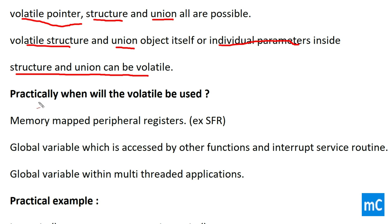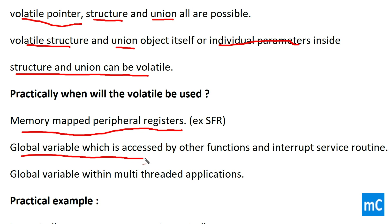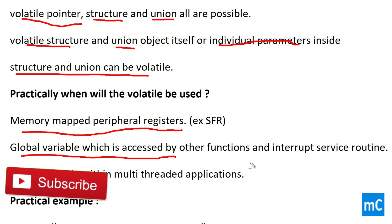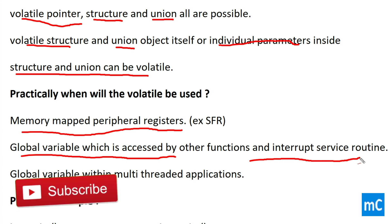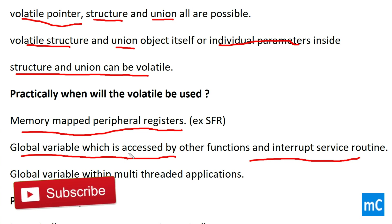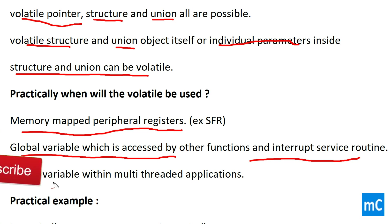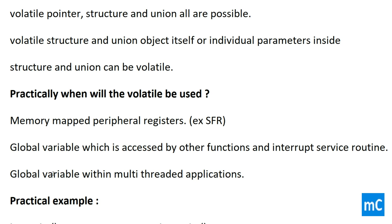Practically, when will volatile be used? First, for memory-mapped peripheral registers. Second, a global variable which is accessed by another function. Third, a global variable within a multi-threaded application. We will understand this with a practical example.